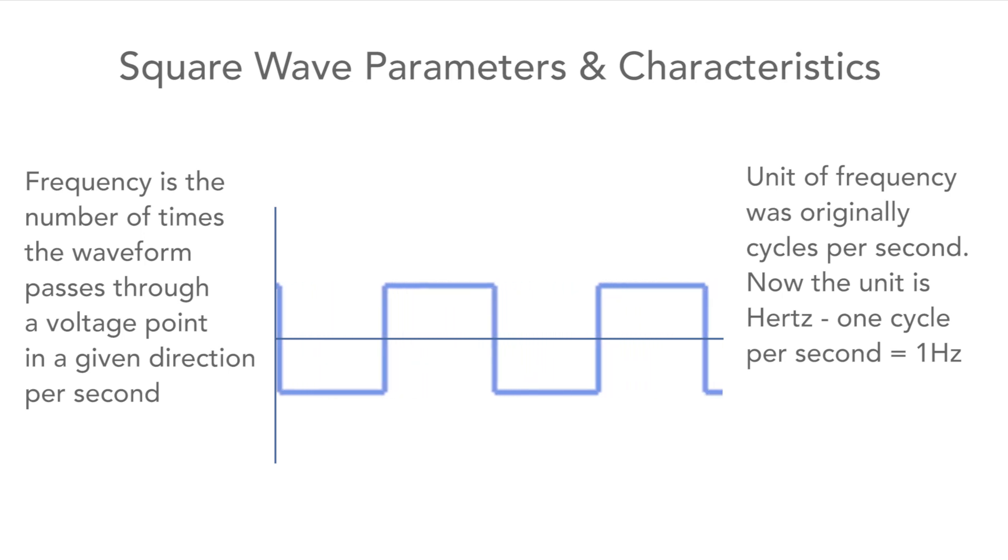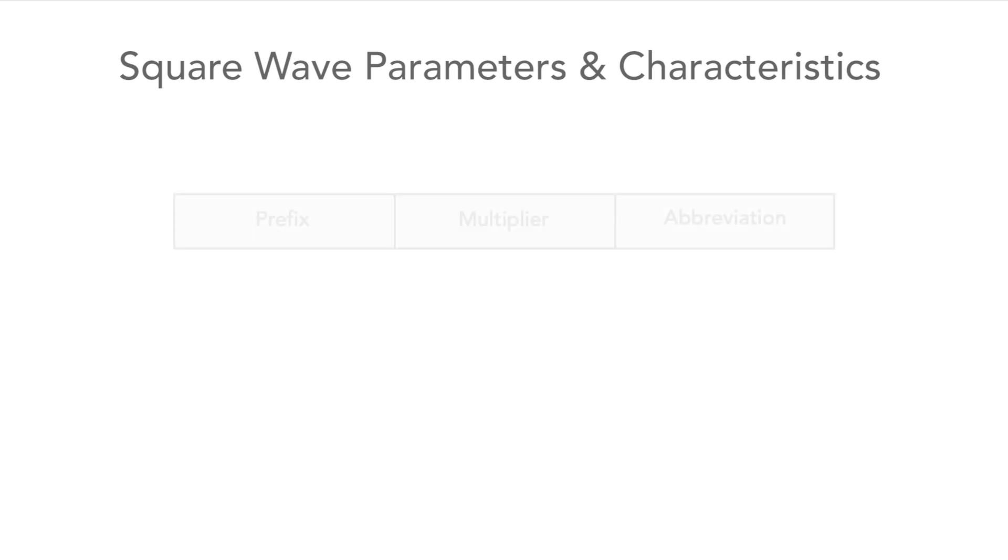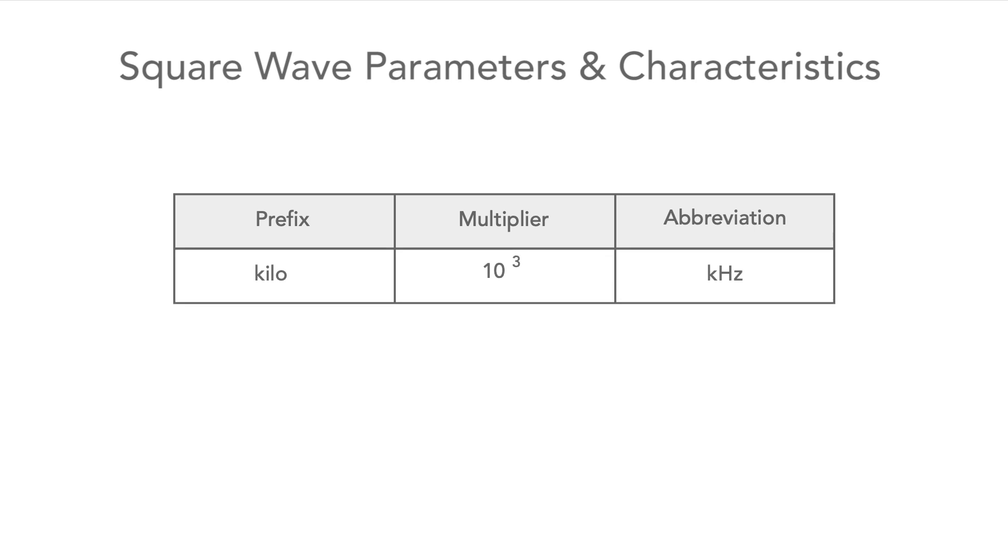The unit of frequency is the hertz and this corresponds to one cycle per second. As with the sine wave, the metric multiplies of kilo for a thousand hertz, mega for a million hertz, and even giga for a thousand million hertz are all used.